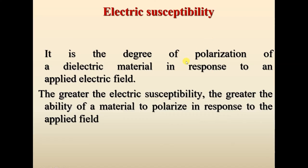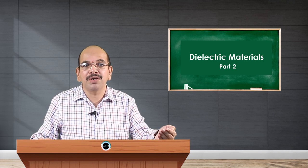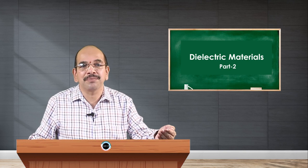Electric susceptibility is another parameter for dielectric materials. It is the degree of polarization of the dielectric material in response to an applied electric field — measuring how susceptible the medium is to the external field. Even if you apply a large electric field, if there is no polarization, then susceptibility is zero. Greater the electric susceptibility, greater the ability of the material to polarize. Using the same classroom analogy: if no student looks toward the board when the teacher enters, electric susceptibility is zero.